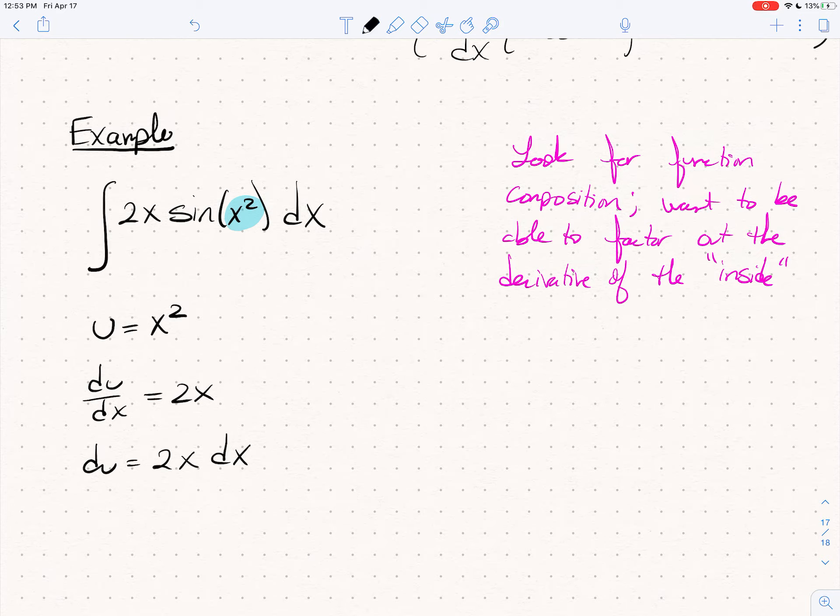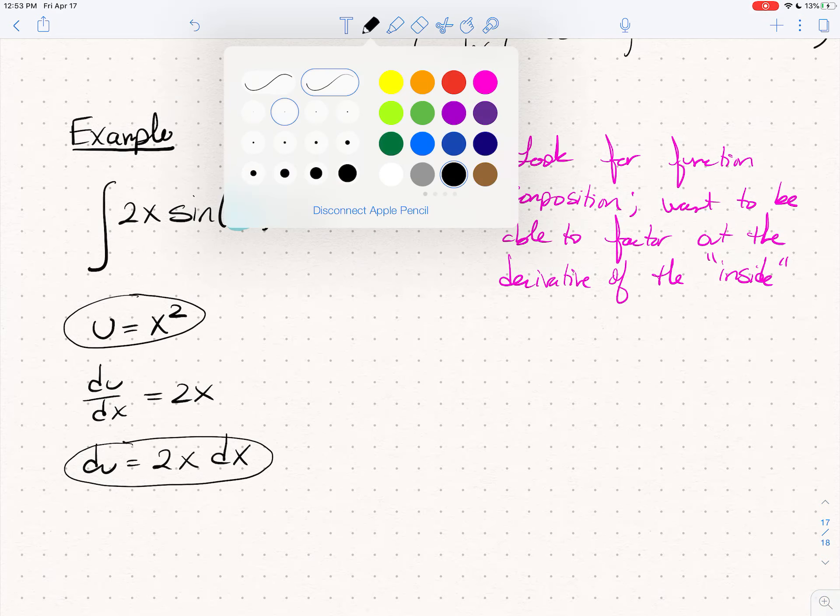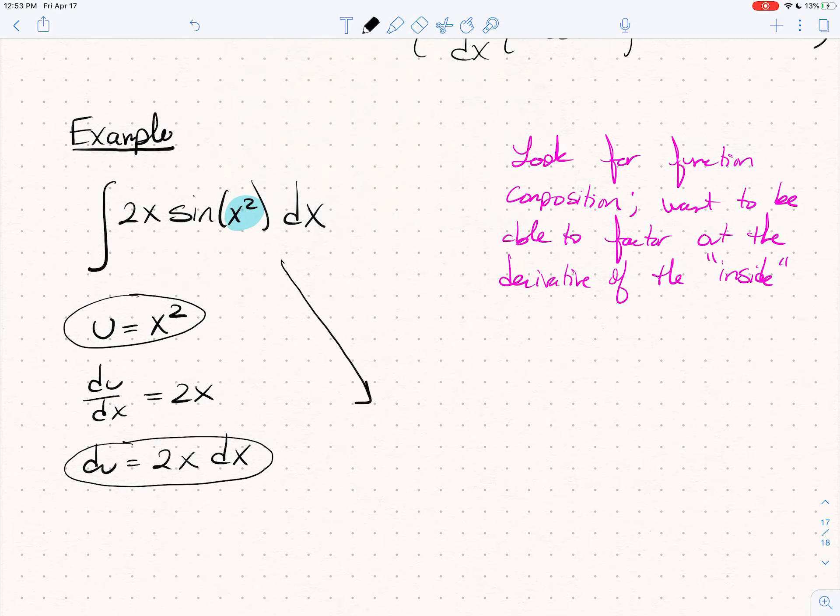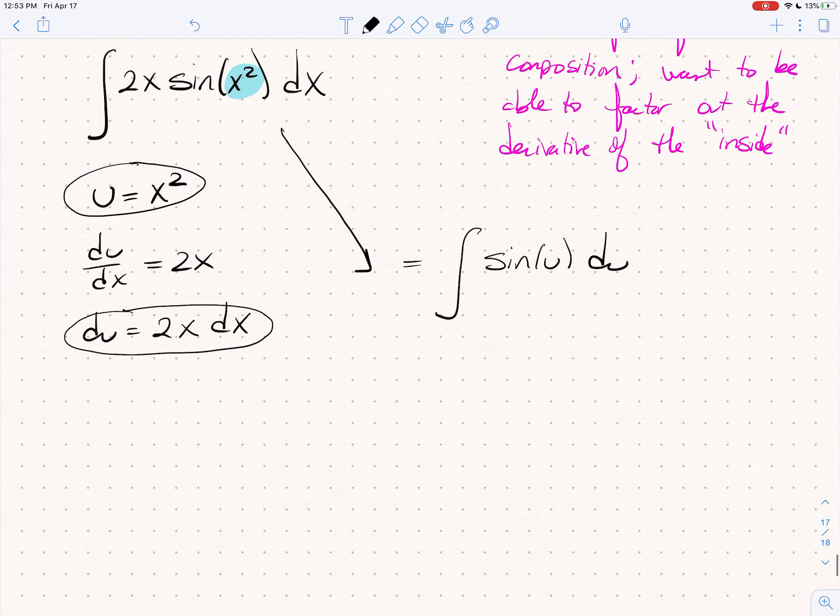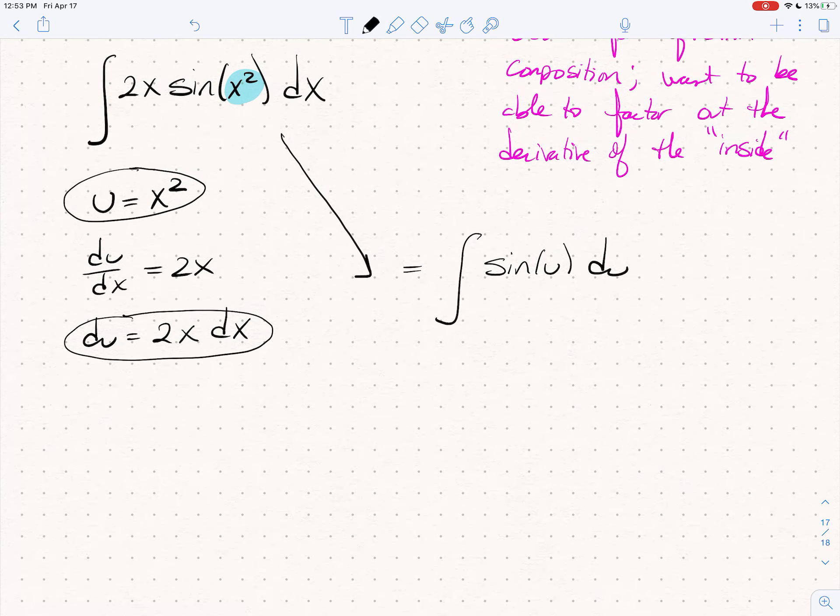Our goal is to transform this integral entirely in terms of u. If you look now, I've got my hands on a u. That's the inside function. And I know what the derivative of u is. There it is. Watch what happens now. I can take this problem, and I can write this as the integral of the sine of u. And then I know that 2x dx is just du. So, this becomes the sine of u du.